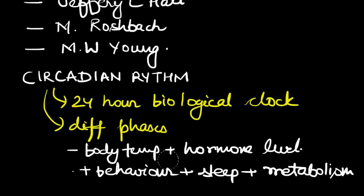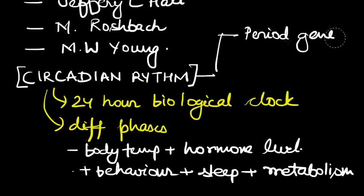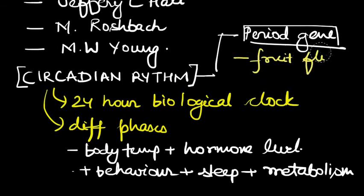Thus this is a very important rhythm which needs to be known. These are the people who made us aware about the importance of this circadian rhythm and they did it by understanding a period gene. They isolated a gene in order to understand how this circadian rhythm is governed and this period gene they found out in fruit flies.